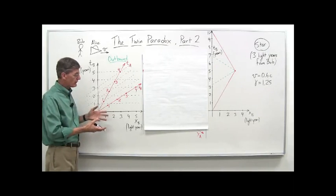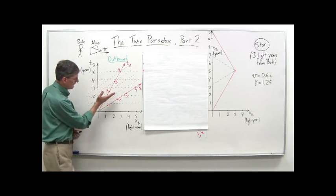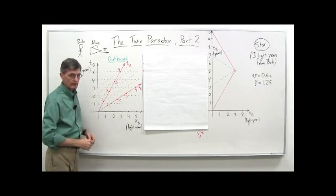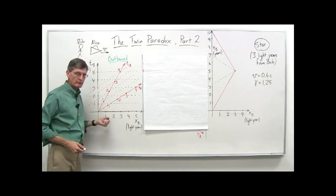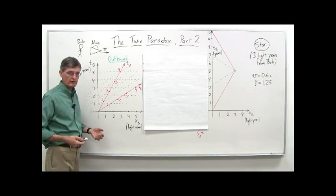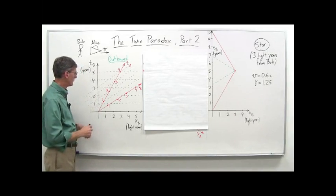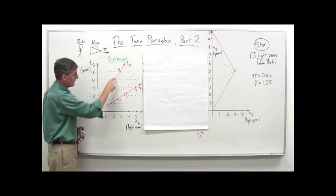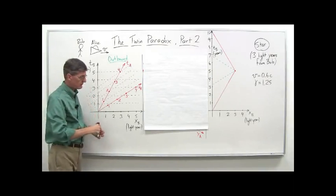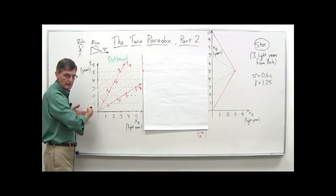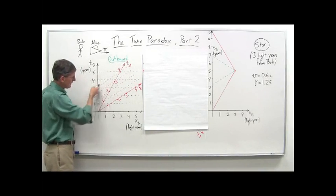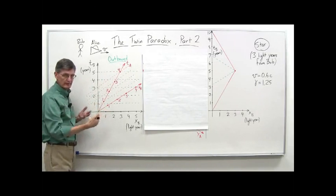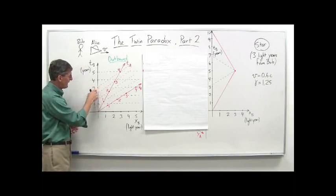The key thing to remember is the lines of simultaneity. The dashed red lines are the lines of simultaneity for Alice. The black horizontal lines are the lines of simultaneity for Bob. The lines of simultaneity represent the lattice of clocks in each frame of reference. So she has her lattice of clocks all synchronized, and when this clock is at four, all her clocks read four — that's the definition of a line of simultaneity, a line of same time.